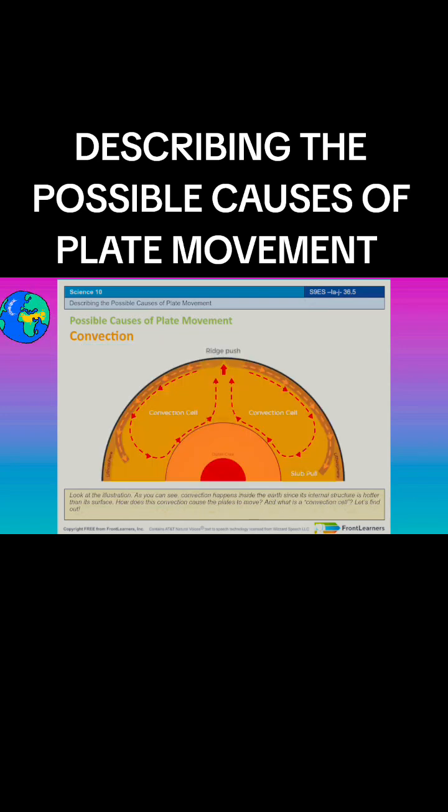Look at the illustration. As you can see, convection happens inside the earth since its internal structure is hotter than its surface. How does this convection cause the plates to move? And what is a convection cell? Let's find out.